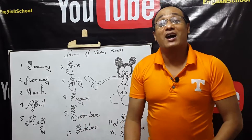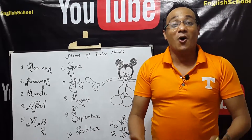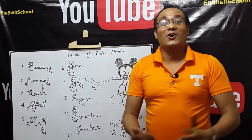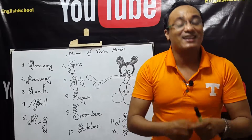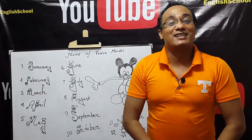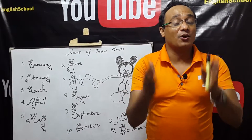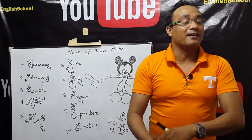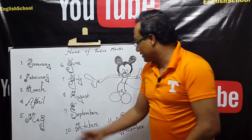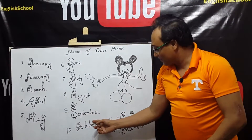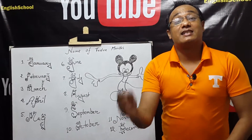Dears, are you practicing? We'll go through this way. August. Number nine: September.